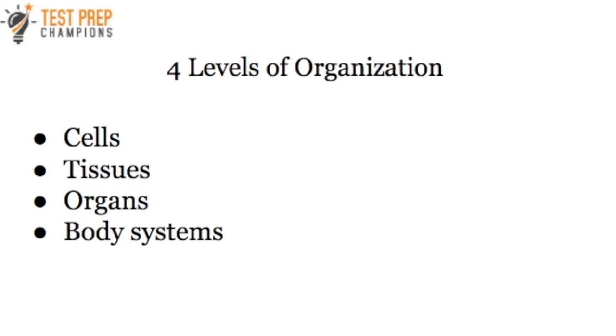The human body has four basic levels of organization: cells, tissues, organs, and body systems.